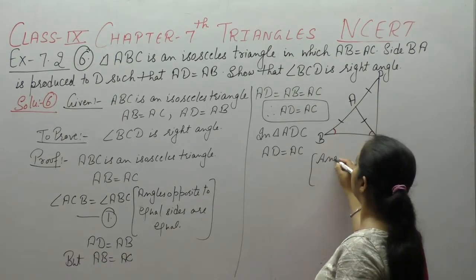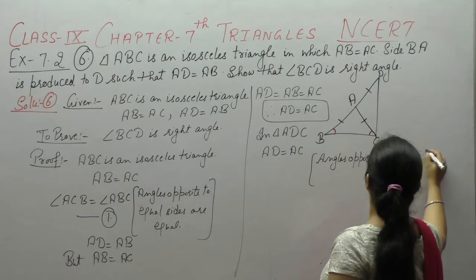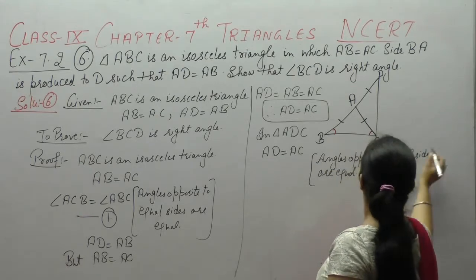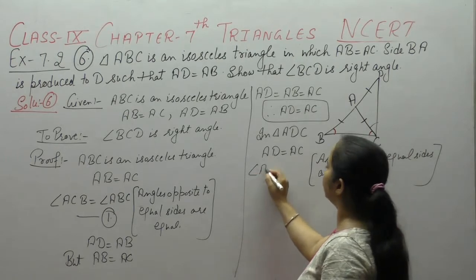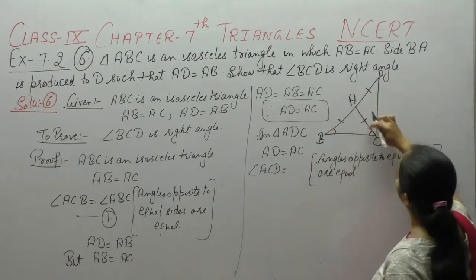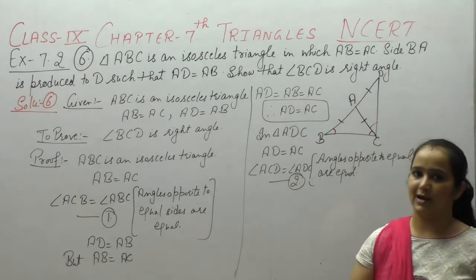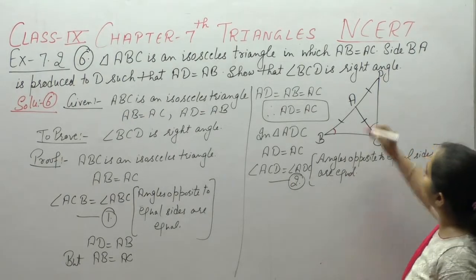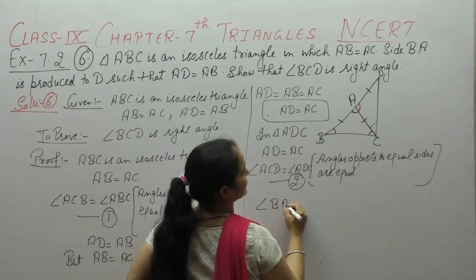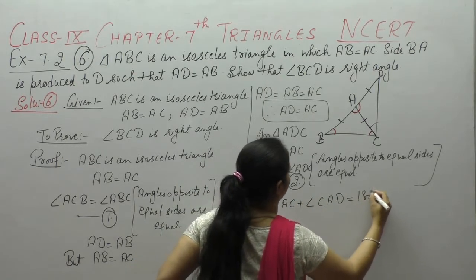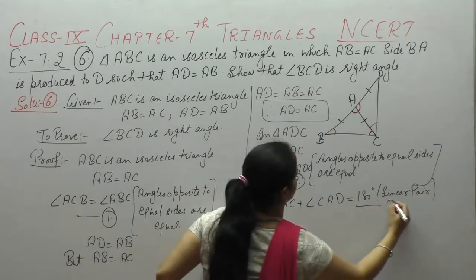In triangle ADC, AD is equal to AC. Again, angles opposite to equal sides are equal — AD के opposite angle ACD और AC के opposite angle ADC। So angle ACD is equal to angle ADC — इसे equation number 2 मान लेते हैं। यह पूरा एक linear pair बन रहा है: angle BAC plus angle CAD is equal to 180 degrees — equation number 3.